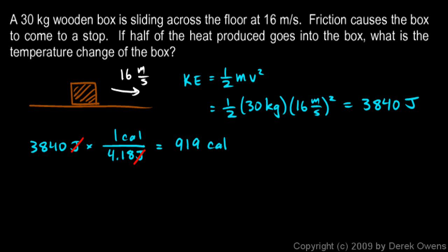Now some of that heat warms up the box, some of it warms up the floor. We're told that half the heat produced goes into the box, so let's take that number and divide it by 2. 919 divided by 2 comes out to 459 calories. So that much heat goes into the box.